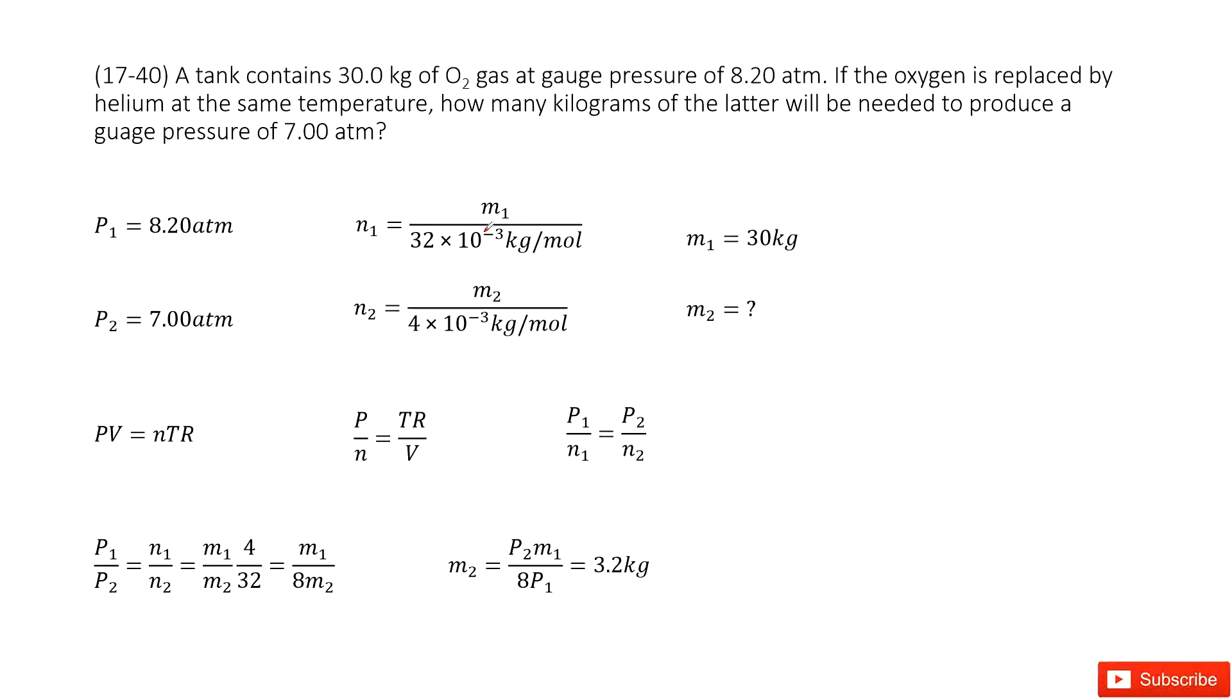We have a container, and the mass of the oxygen gas is given as 30 kilograms. We can easily find the mole number N1 as the mass M1 divided by the oxygen molar mass, 32 times 10 to the negative 3 kilograms per mole. The pressure at this part is given as 8.2 atm.